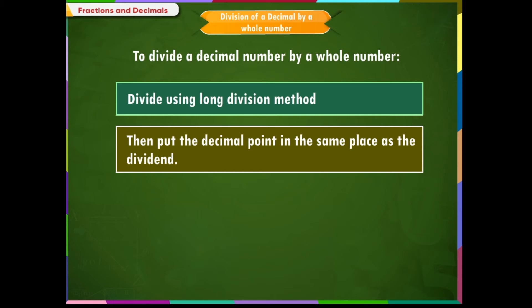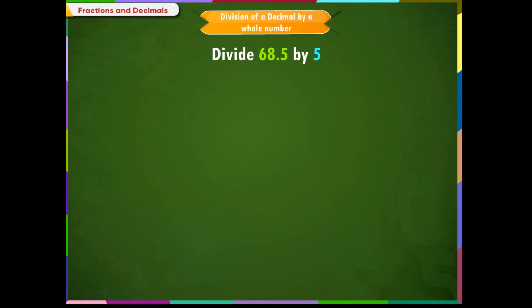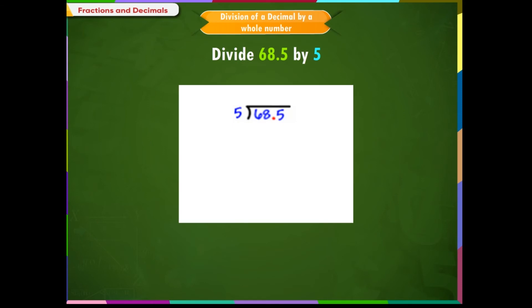Let us take a few examples to understand this. Example 1: divide 68.5 by 5. Step 1: ignore the decimal point and use the long division method. Step 2: since there is one place of decimal in the dividend, we put the decimal point at one place of decimal in the result.